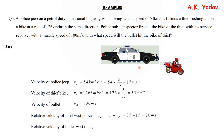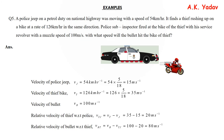We need the relative velocity of the bullet with respect to the thief. The bullet's speed is 100 m/s and the thief is moving at 20 m/s relative to the police. So the relative velocity of bullet with respect to thief = 100 − 20 = 80 m/s.